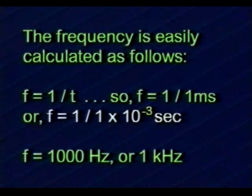The frequency of the sine wave is easily calculated by using the formula f equals 1 divided by t. So in our example, f equals 1 divided by 1 millisecond, or 1 divided by 1 times 10 to the minus 3 seconds. Therefore, the frequency of the signal is 1,000 Hertz, or 1 kilohertz.